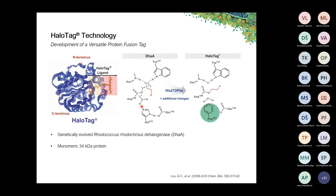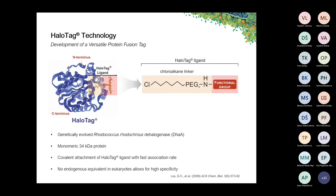This histidine residue was one of the amino acids substituted during the developmental process of HaloTag — it was replaced by phenylalanine, thereby preventing reversal of the covalent bond. This means we can rapidly, easily, and irreversibly label HaloTag proteins with so-called HaloTag ligands, and we can do this very specifically because there is no endogenous equivalent in eukaryotes. Such a HaloTag ligand is composed of a chloroalkane linker sequence — the part irreversibly bound by HaloTag.